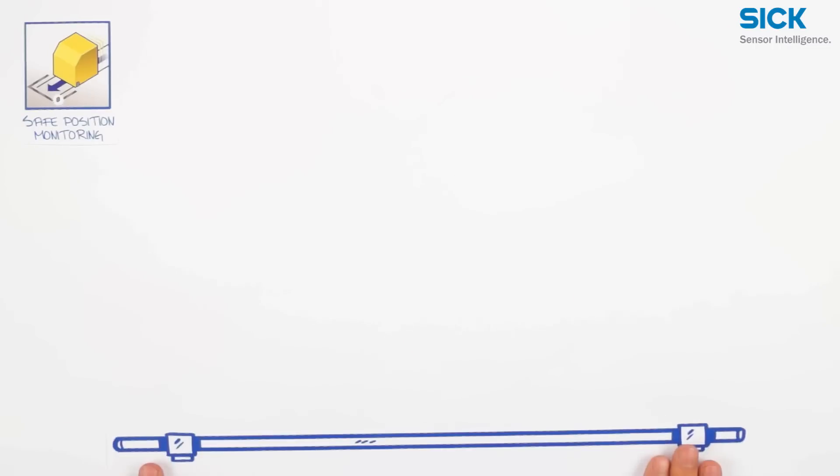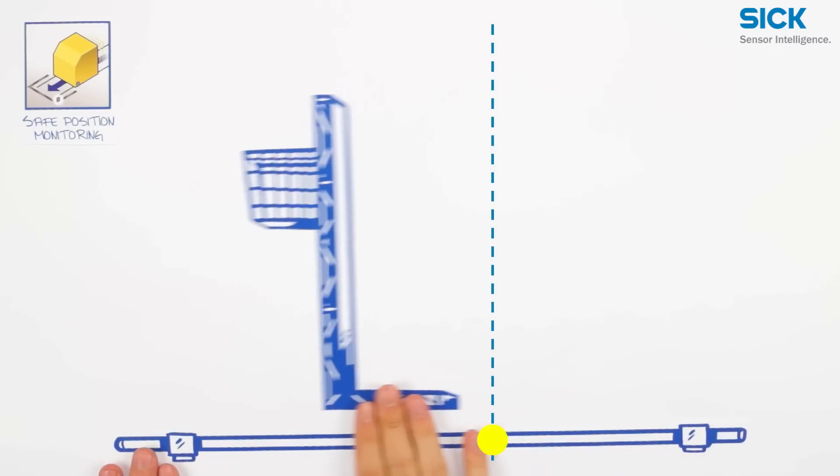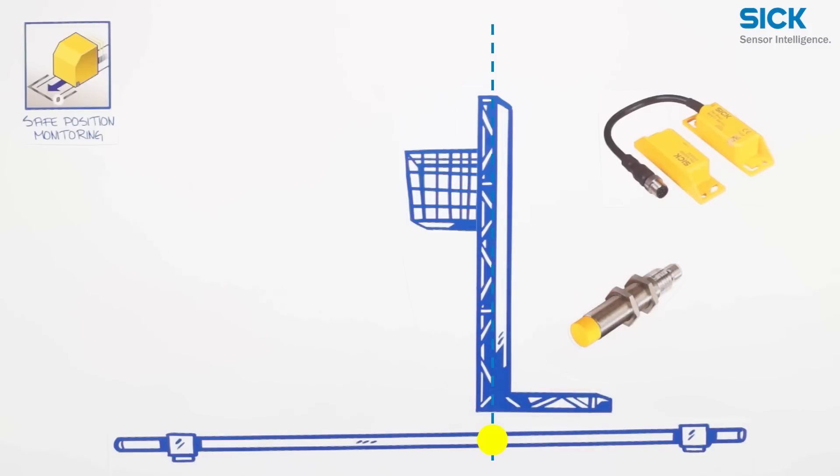Now let's cover safe position monitoring. Some production processes only allow actions to be performed when the machine part is in a certain position. For these applications, you can use non-contact inductive safety switches that are activated by metal or transponder safety switches, which are activated with a coded actuator. To stop the machine safely in the end positions, electromechanical safety position switches can be used.